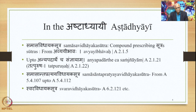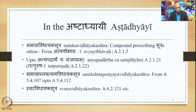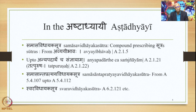Then the Samasanta Pratyaya Vidhayaka Sutras — the sutras which prescribe the suffix added at the end of the Avyaibhava Samasa — these sutras are found in 5.4.107 up to 5.4.112, this particular small section of the sutras. Similarly, 6.121 etc. are the Swaravidhayaka Sutras, stating the accent of the Avyaibhava Samasa. This is how Avyaibhava Samasa is treated in the Ashtadhyayi at various places.